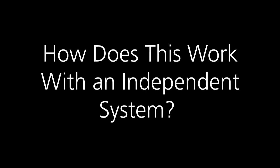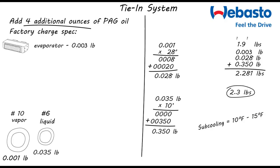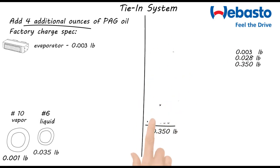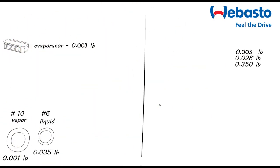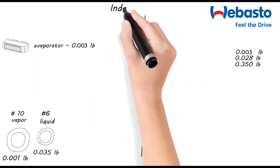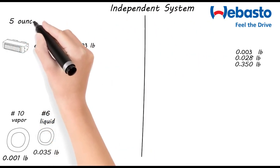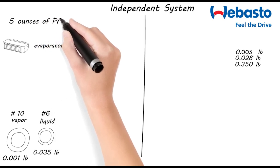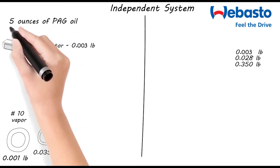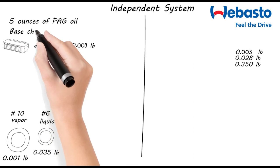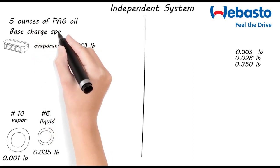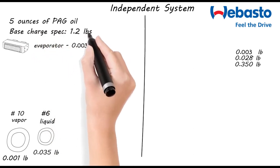Well, how about an independent system? Well, the same principles apply. So we'll leave the values for the evaporator and the number 10 and number 6 hoses in place. Now an independent system needs 5 ounces of PAG oil. And that will remain a constant with independent systems. We're going to start with a base charge specification of 1.2 pounds. And we'll just add this to the stack over here.